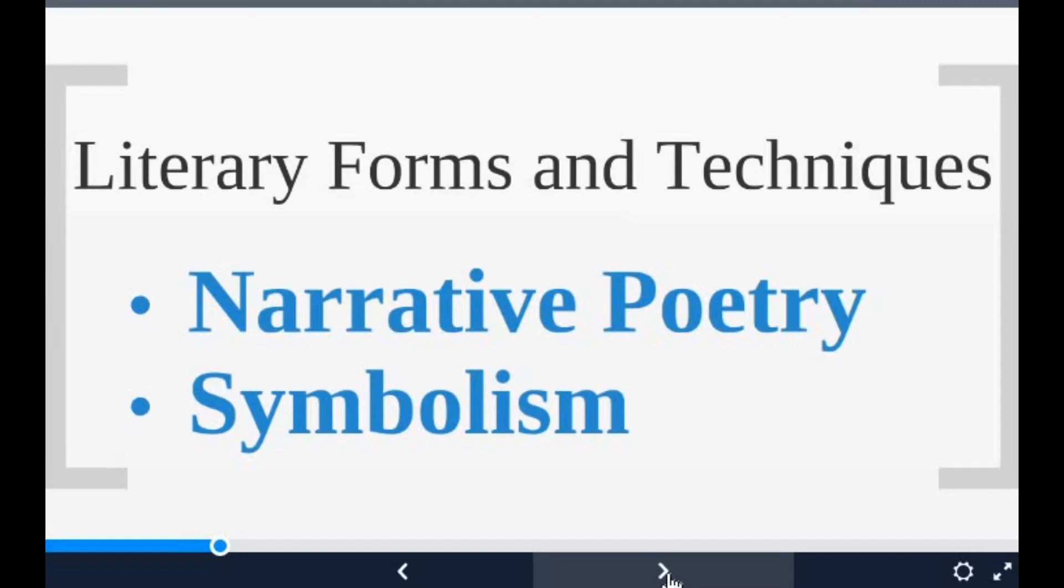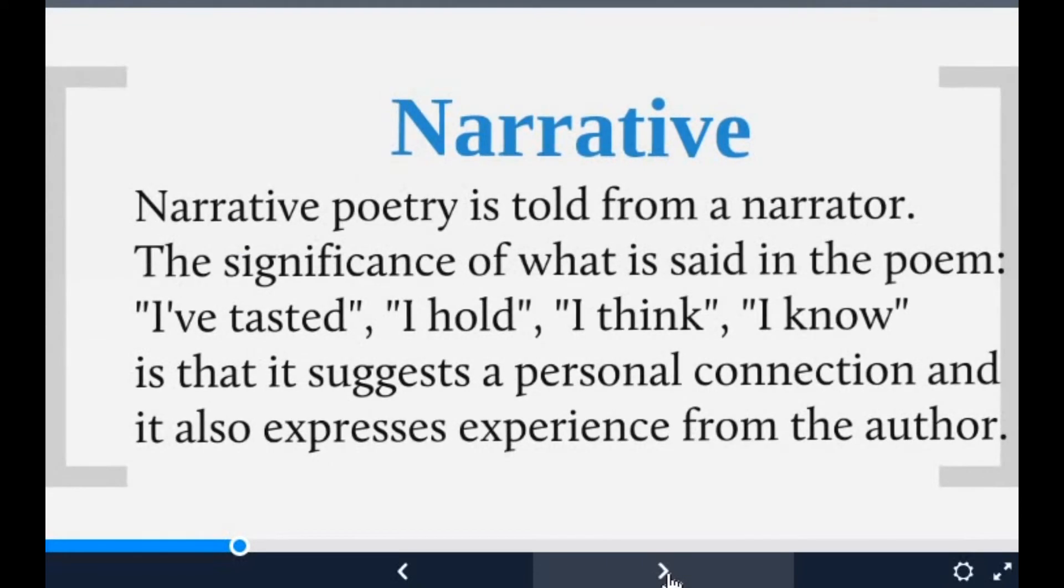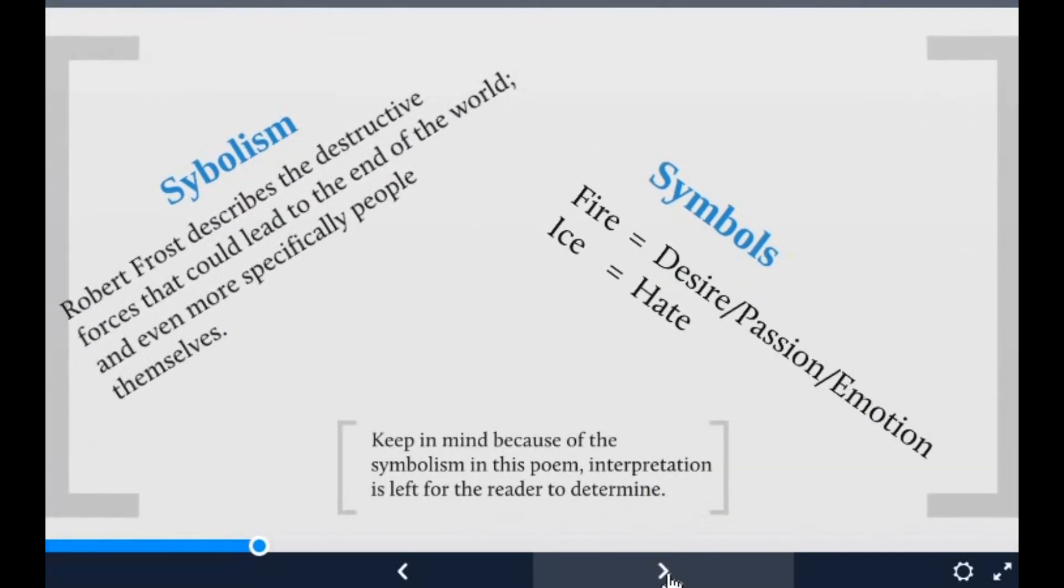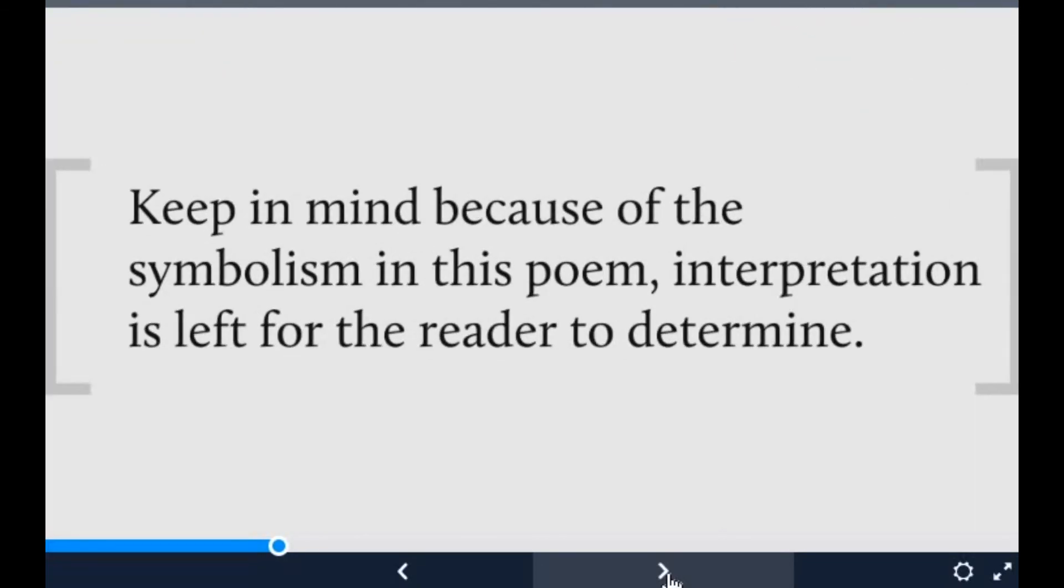The narrative explanation from the narrator's point of view is significant—he says I tasted, I hold, I think, I know. It suggests a personal connection and expresses experience from the author's point of view. But then there is symbolism: fire and ice are the two major symbols of the poetry. Symbolism is used in such a way that the poet describes the destructive forces that could lead to the end of the world, and even more specifically, people themselves.